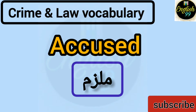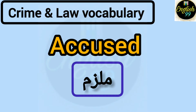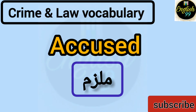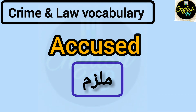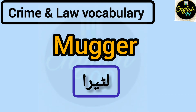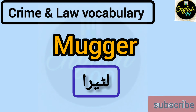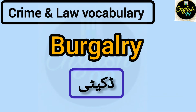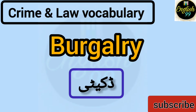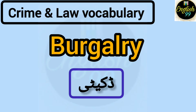First vocabulary word: 'accused.' Accused kehte hain mulzim ko, yaani jo mujrim hota hai, is English mein kehte hain accused. Next hai lotera ya daku — is English mein kehte hain mugger. Dakaiti ya chori ko English mein kehte hain burglary.